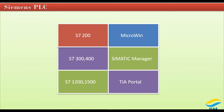TIA Portal can also program S7-200, S7-300, and S7-400, unlike Simatic Manager which can only program S7-300 and S7-400 — you cannot program S7-200, S7-1200, or S7-1500 in Simatic Manager. TIA Portal — Totally Integrated Automation Portal — brings a change where you can program S7-200, S7-300, S7-400, S7-1200, or S7-1500 all in one software. You can also program HMI and touch panels with it.